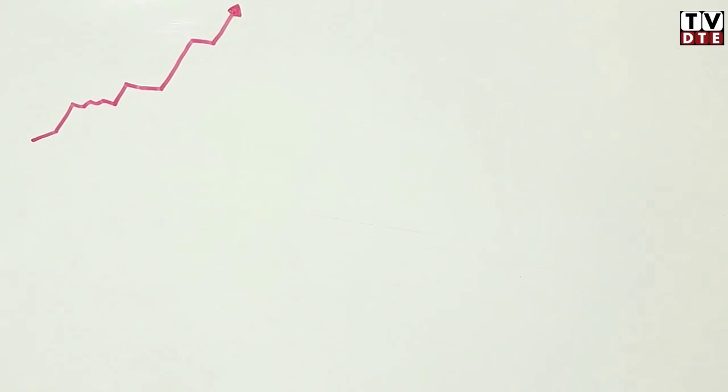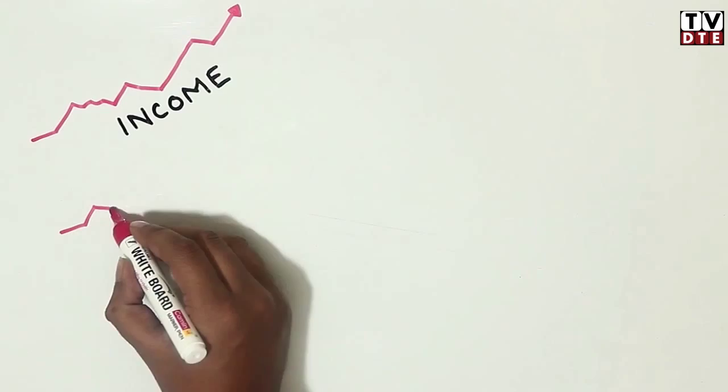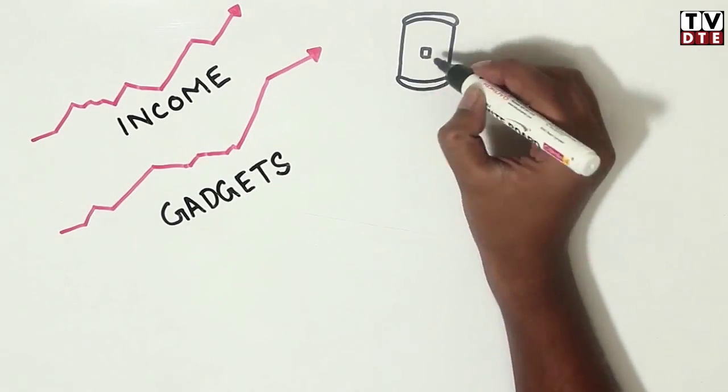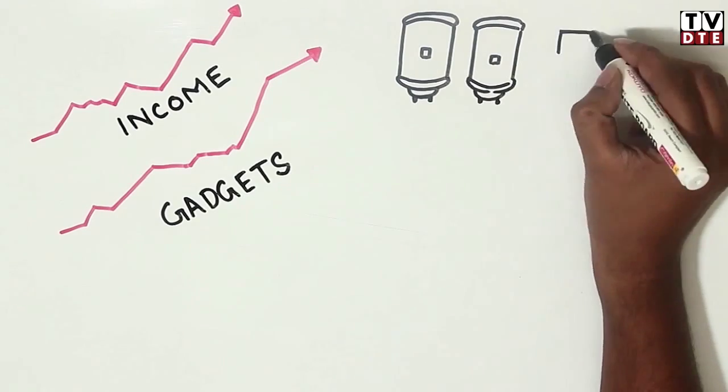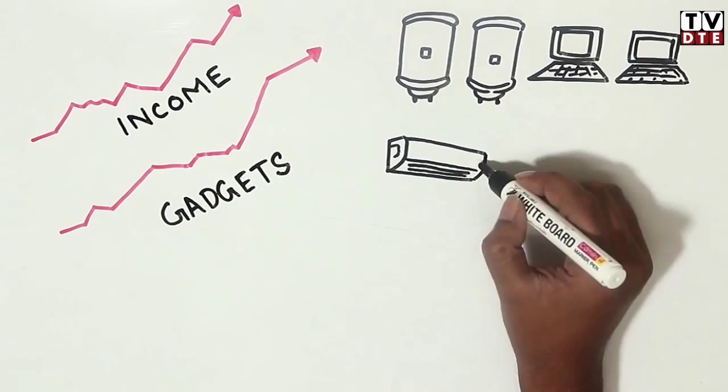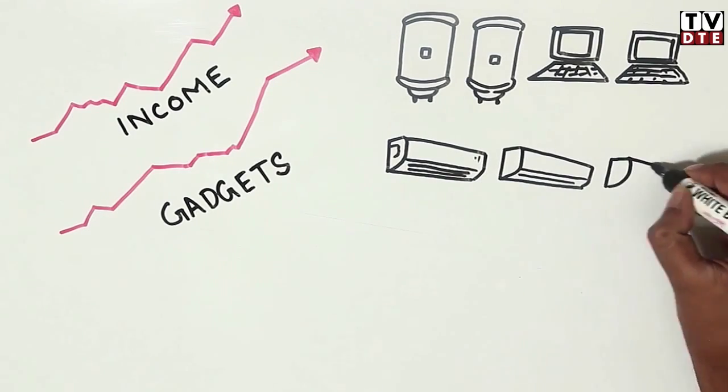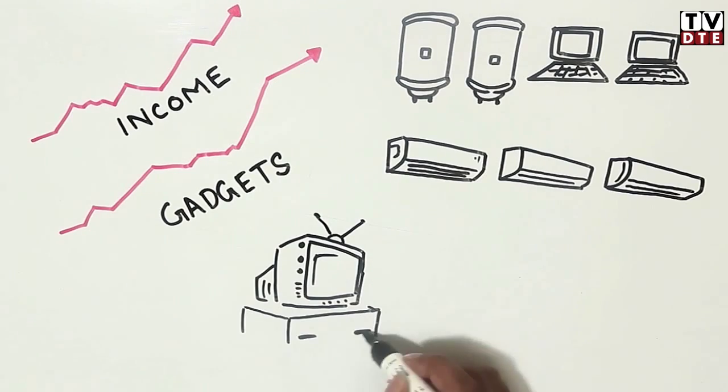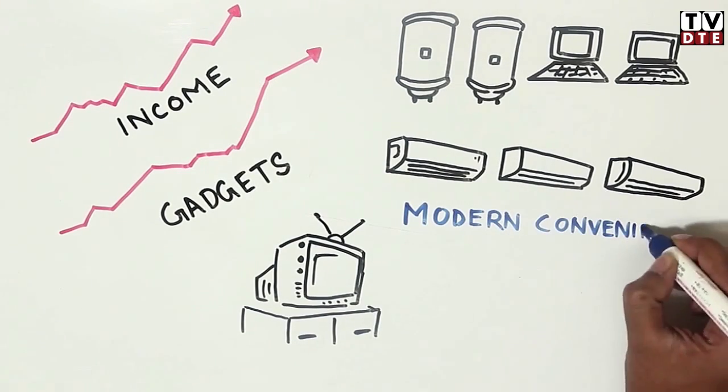But over the years, as his income grew, Mr. Saxena began to add more and more gadgets to his house. He first added two geysers, then followed it up with two computers for his two children, and then bought three ACs to satisfy his cooling needs. He bought an additional television for his bedroom and populated his kitchen with modern conveniences.